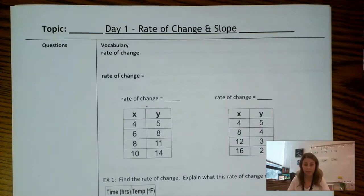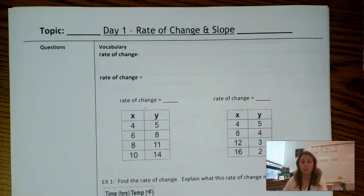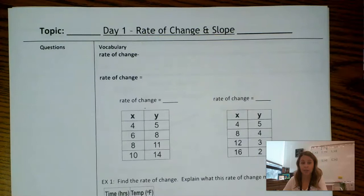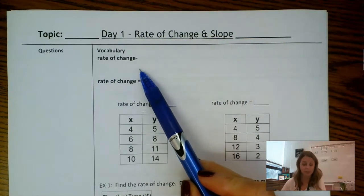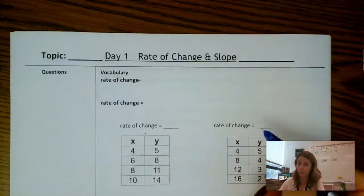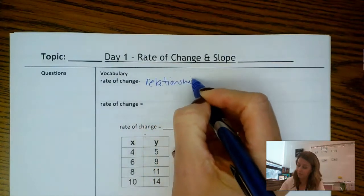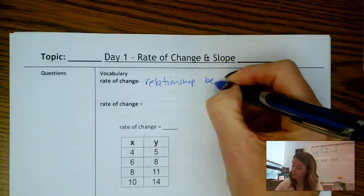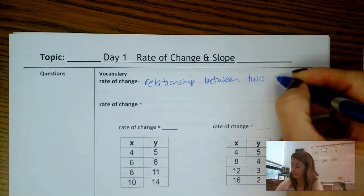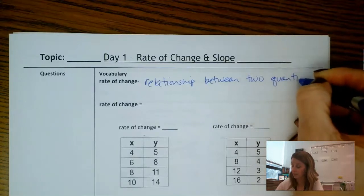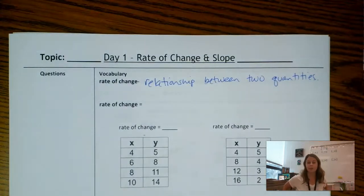So I have a little vocabulary I'm going to have you write down and then we're going to talk about slope, talk about how it's basically a rate of change and use those terms interchangeably. So first item here, rate of change, it is a relationship between two quantities.